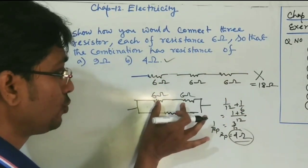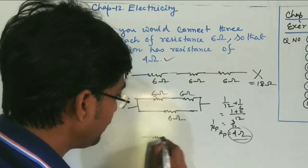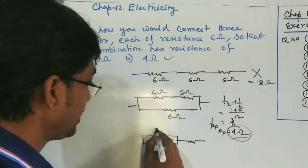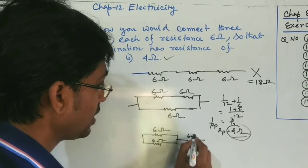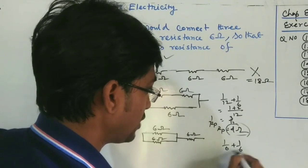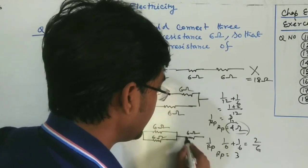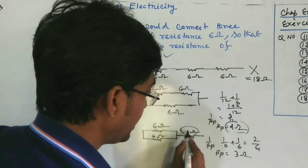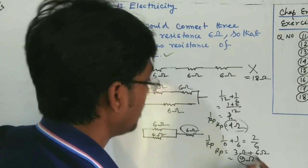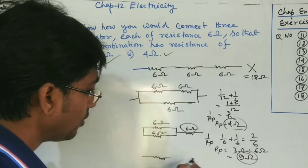For the third type: take two resistors in parallel and the third in series. For the parallel pair: 1/6 + 1/6 = 2/6, so Rp = 3 ohm. Then 3 ohm in series with 6 ohm gives 3 + 6 = 9 ohm. So the second answer is 9 ohm, which also matches.